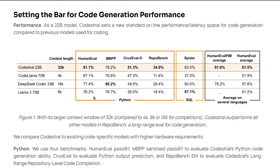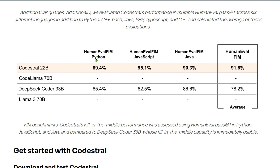Codestral 22B is the winning LLM overall. On the SQL benchmark it's in second position, but averaging across all languages it stands at the top, beating Code Llama 70B, DeepSeek Coder 33B, and Llama 3 70B. For Python, JavaScript, and Java, the average is highest for Codestral 22B. That's the statistics — now let's try it ourselves and see how effective it is.